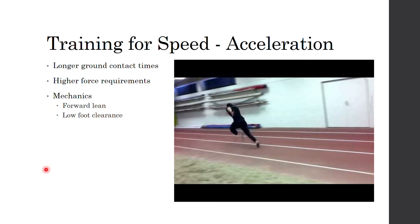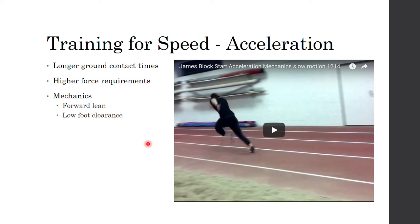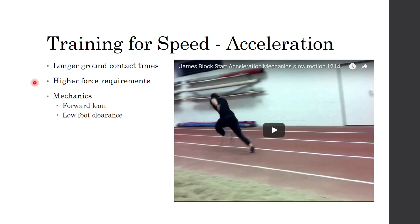Speed can basically be broken down into a few different general categories. The first is acceleration, which is characterized by longer ground contact times and higher requirements for force. When we look at the mechanics, there's more of a forward lean and a low foot clearance. What I mean by longer ground contact times is that each step on the ground is going to be longer during the acceleration phase than when we are at top end speed. The higher force requirements are needed because when we're accelerating, we have little to no momentum, so the complete inertia of our body weight has to be overcome.